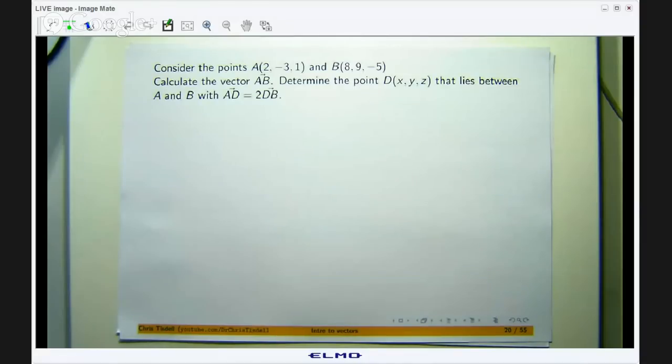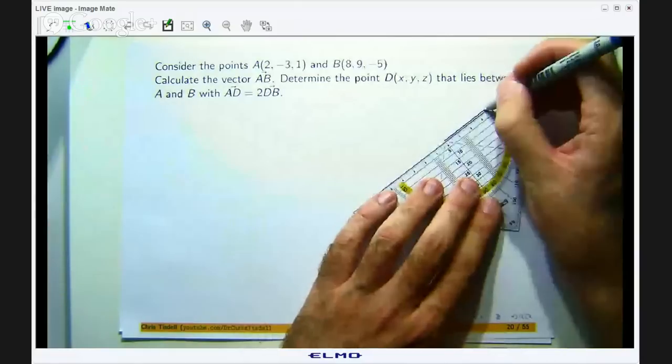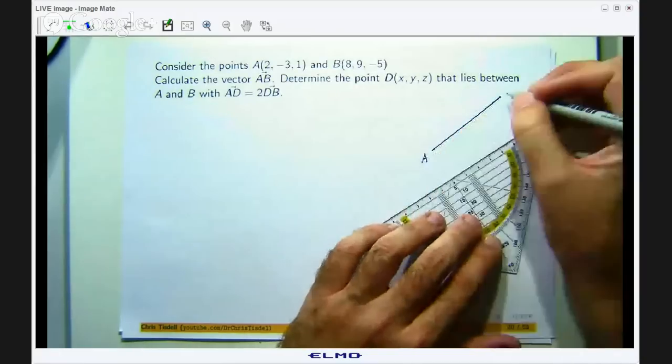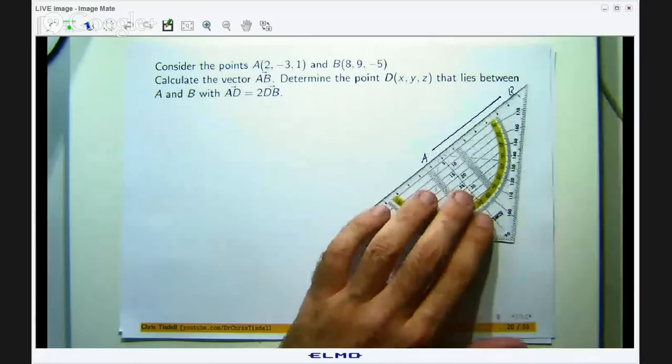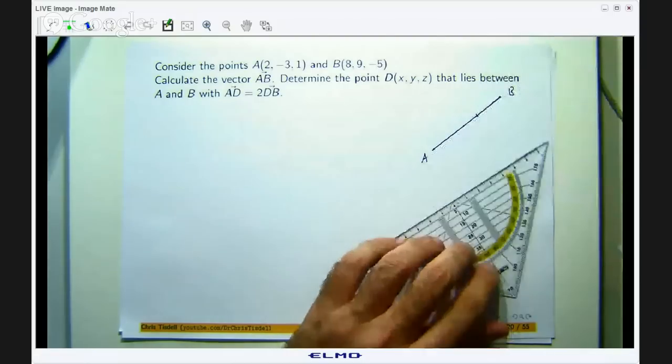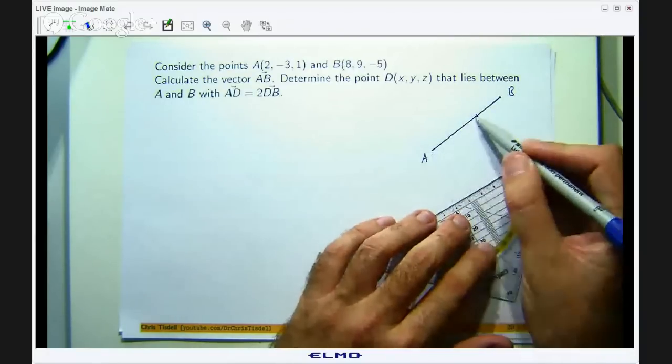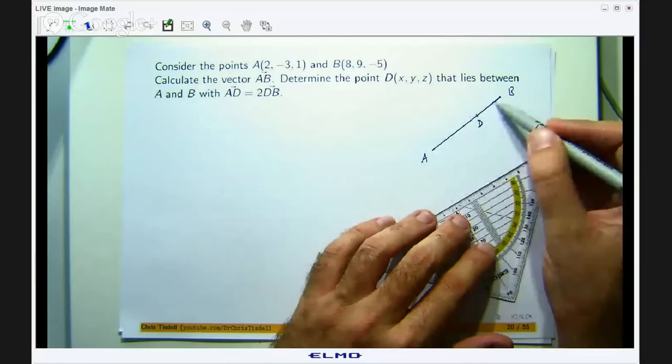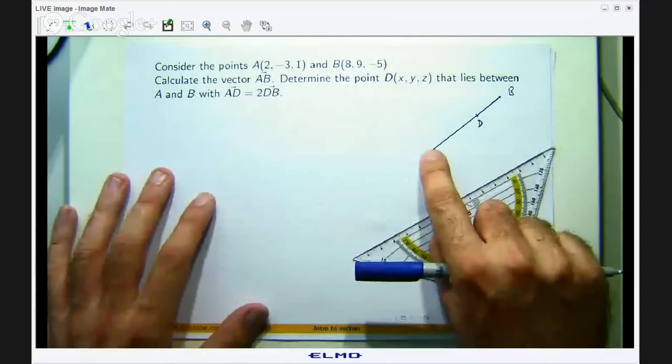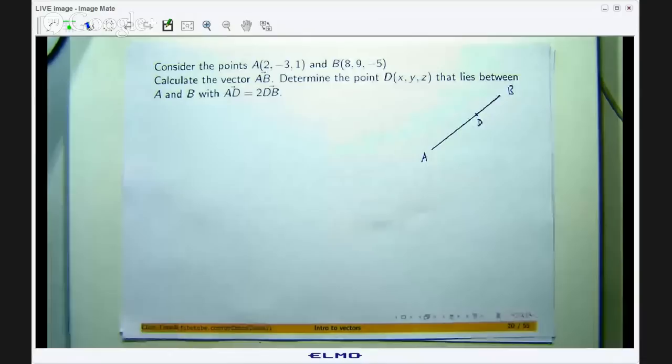Okay so let me just draw a little diagram and show you what I mean. Okay so we have got point A and we have got some other point B and we want to determine a point D such that the ratio of this line segment to this line segment is 2 to 1. In other words the vector from A to D is twice as long as the vector from D to B.